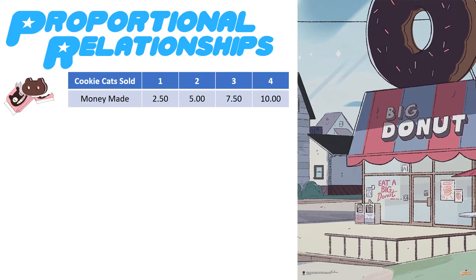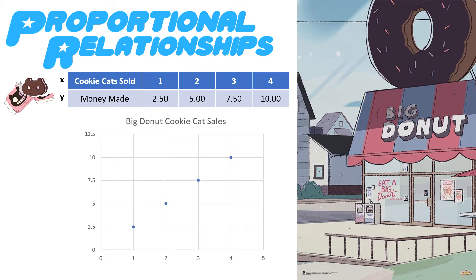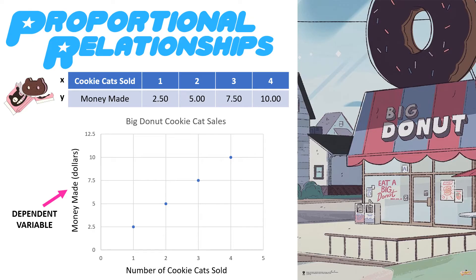Let's look at this in a different way — same information, same table with our number of cookie cats sold and the money that we made. The top row represents our X and the bottom value represents our Y. Now we're going to show this in a graph. On a graph, the dependent variable is always going to be on the Y axis, and the independent variable is always going to be on the X axis. Your X values are always the independent variables on the X axis, and your Y values are always the dependent variables on the Y axis.